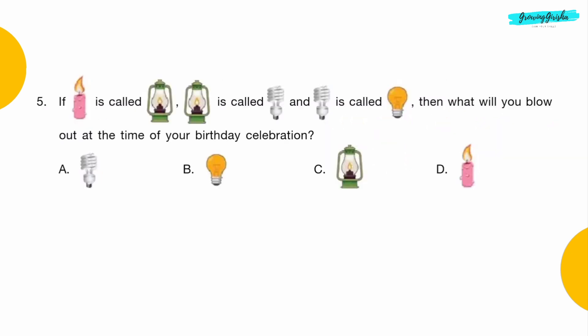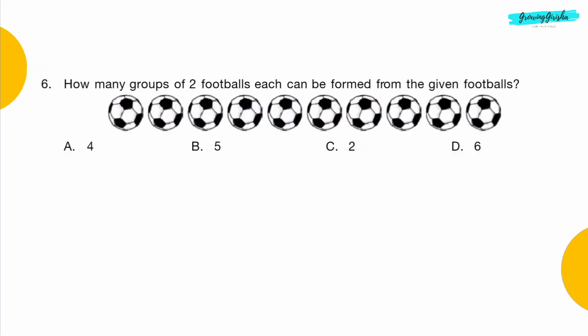Question 5: If candle is called lantern, lantern is called CFL light, and CFL light is called bulb, then what will you blow out at the time of your birthday celebration? Option C: Lantern.